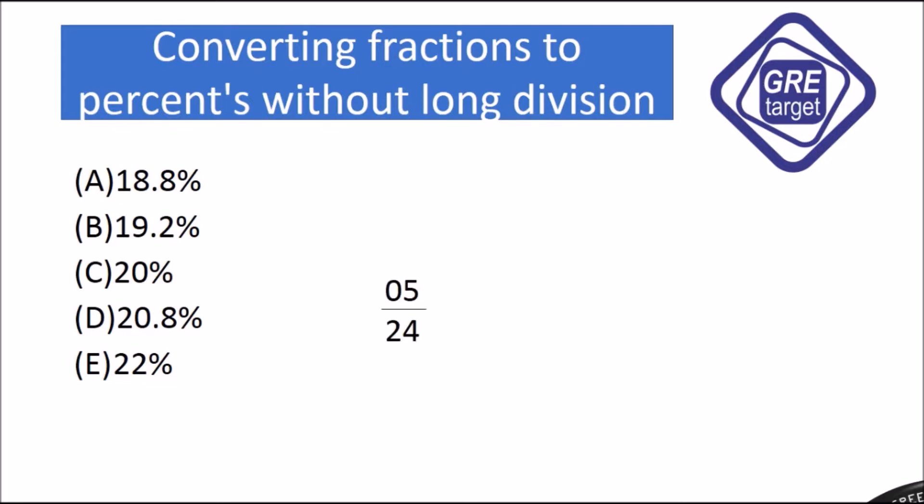Suppose our fraction is 5 divided by 24. We have to rewrite the fraction equal to something divided by 100. Now, let's multiply the denominator 24 times 4 to get 96, which is nearby 100. So we have to put the plus sign.